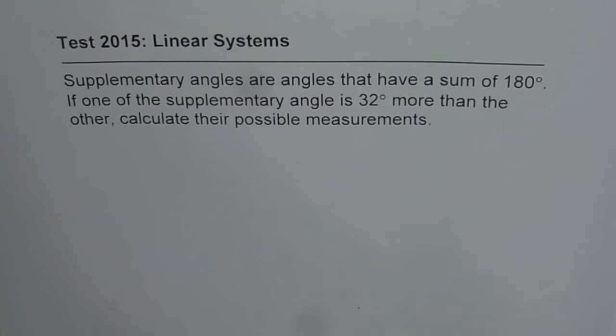I am Adil Kumar and here is a thinking and communication question for you from test paper on linear systems. Supplementary angles are angles that have a sum of 180 degrees. If one of the supplementary angle is 32 more than the other, calculate their possible measurements.